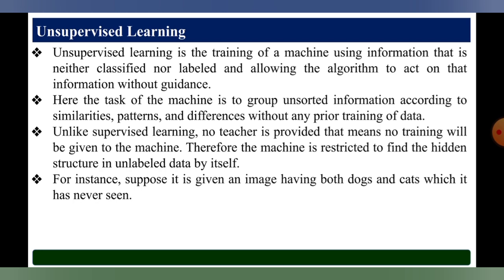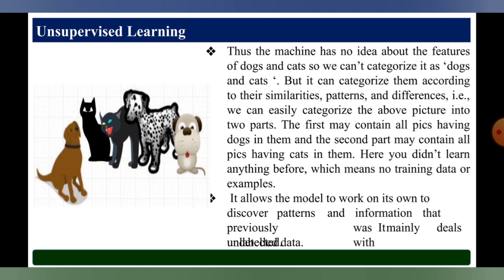Therefore, the machine is restricted to find the hidden structure in unlabeled data by itself. For instance, suppose it is given an image having both dogs and cats which it has never seen. The machine has no idea about the features of dogs and cats, so we can't categorize them directly. But it can categorize them according to their similarities, patterns, and differences — the first group containing all pictures with dogs and the second containing all pictures with cats.